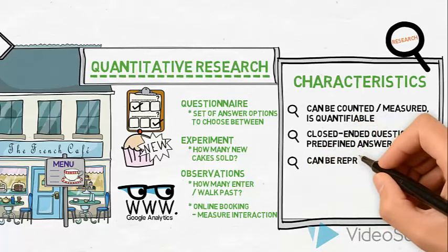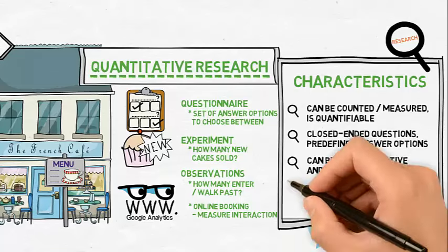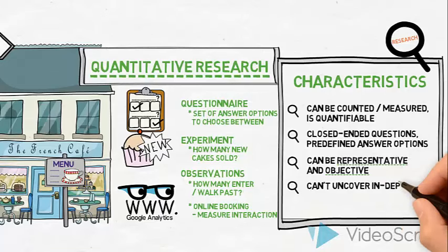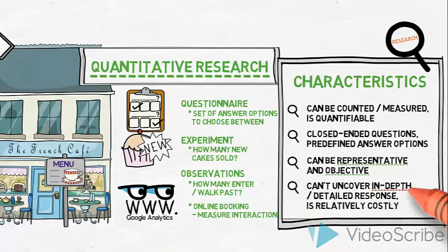The benefits of quantitative data are that it can be representative of the target group since a larger number of respondents can be covered and that it is objective. However, the disadvantages are that it does not uncover in-depth motivations, detailed reasons or underlying feelings and attitudes. And some types of quantitative research can be fairly costly to carry out.